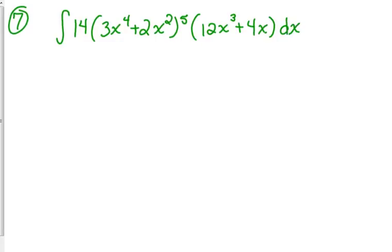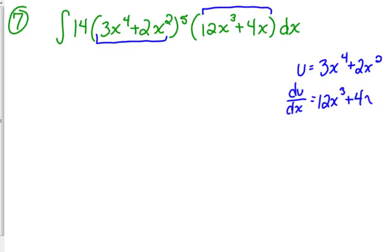So, when I look at that, I've got to figure out which part is my u. So which part of this has its derivative embedded in the problem? Well, the answer to that question is this part right here. If I take the derivative of that, it's going to give me the 12x cubed plus 4x. So I'm going to say, alright, u is 3x to the 4th plus 2x squared. When I take the derivative of that with respect to x, I get 12x cubed plus 4x. That is right here in my problem.